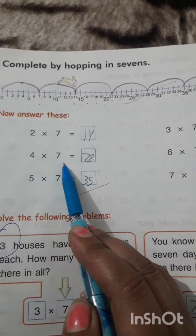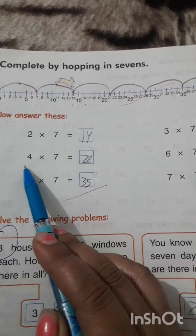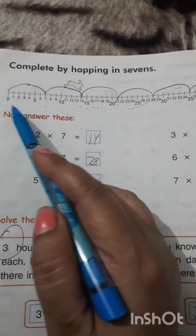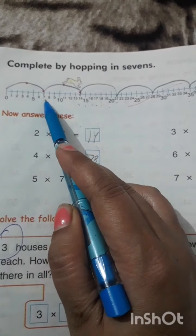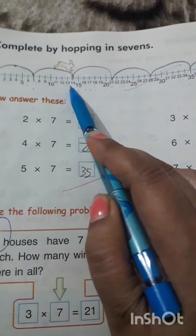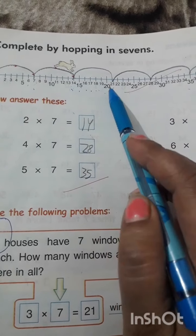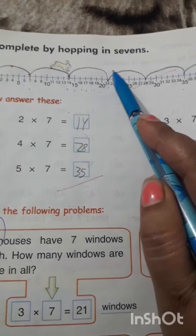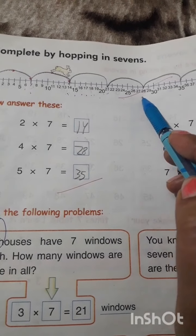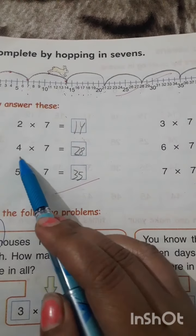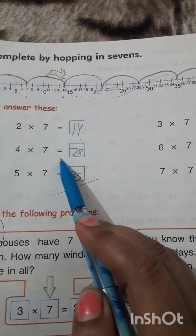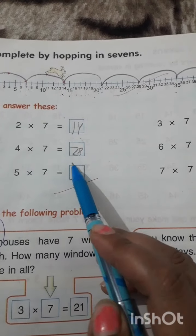4 times 7. How many times? 4 times. 0 to 7, 1 time. 7 to 14, 2 times. 14 to 21, 3 times. 21 to 28, 4 times. 4 multiply 7 is equal to 28. 4 7s are 28.